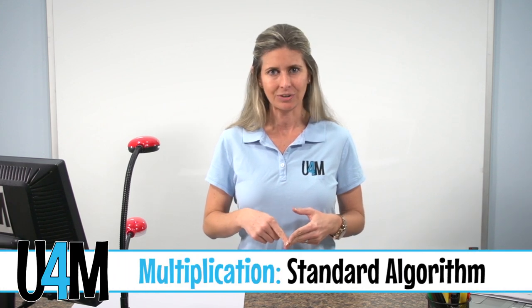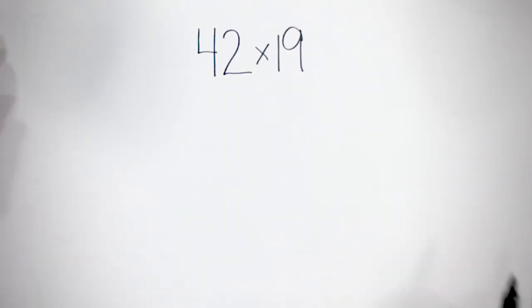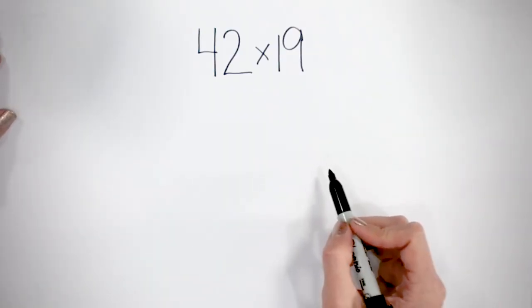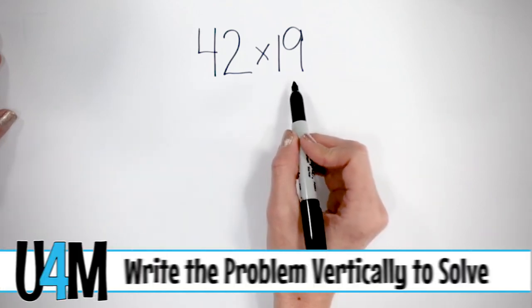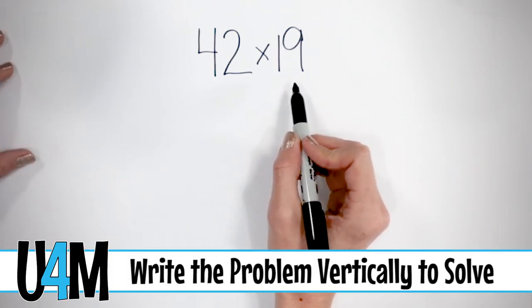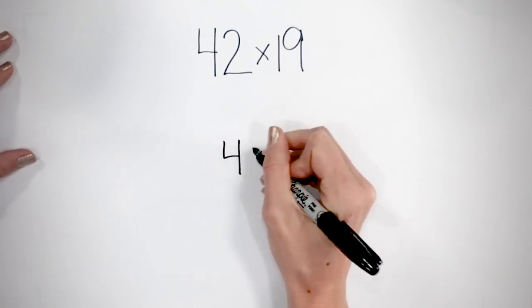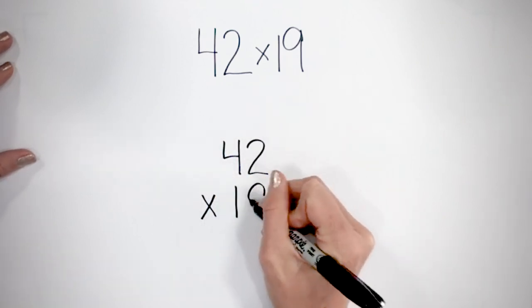In this lesson, we're going to dive right into using the standard algorithm to solve multiplication problems using multi-digit whole numbers. Let's take a look. Here we have 42 times 19. It's written horizontally, so when we're using the standard algorithm, we need to write it vertically — like this: 42 times 19.